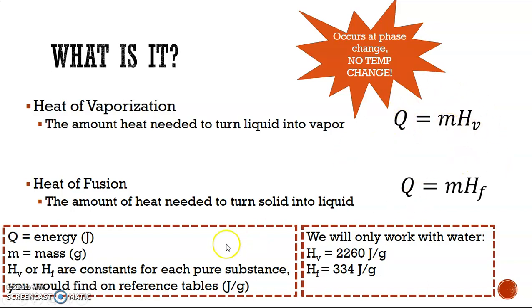Be sure to include what each letter represents, as well as the expected unit. And then our constant for water, the heat of vaporization of water, so the amount of heat needed to turn liquid water into vapor water, is 2,260 joules per gram. So what that means is that for every one gram of water, it takes 2,260 joules of energy to turn it from liquid into vapor.